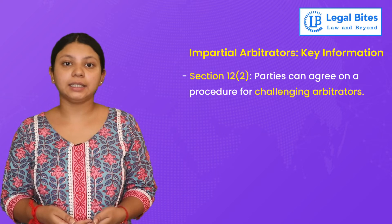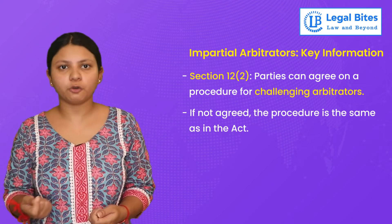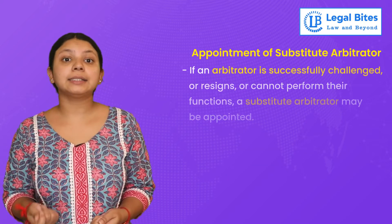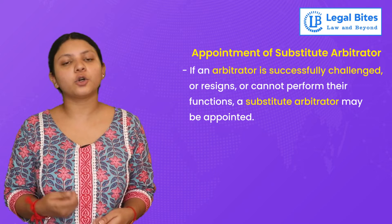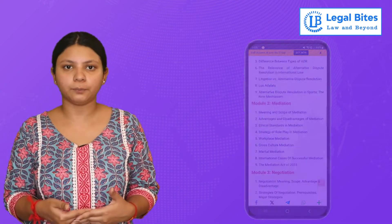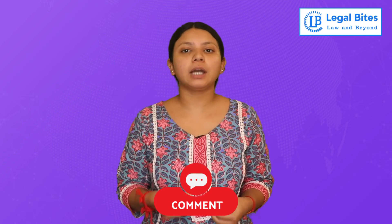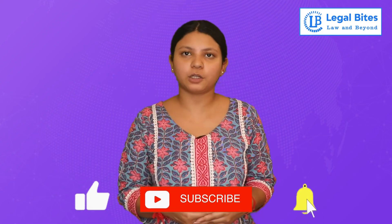Section 12 also provides that a party can challenge an appointed arbitrator. Additionally, if an appointed arbitrator fails to act or it becomes impossible for him to act, the arbitrator can be terminated or substituted. To read in detail about the procedure of termination and substitution, you can visit our website www.legalbytes.in. If you have any questions about the video, please drop them in the comment section below. If you are following our arbitration series, you can find links to previous videos in the description box below. Press the bell icon to be notified for upcoming videos. Thank you.